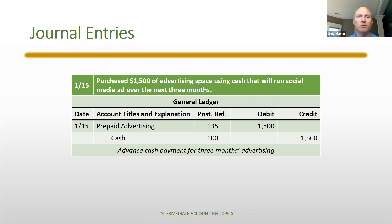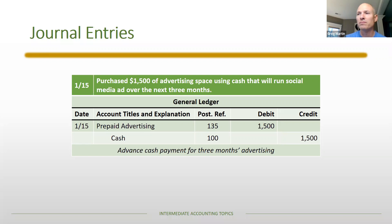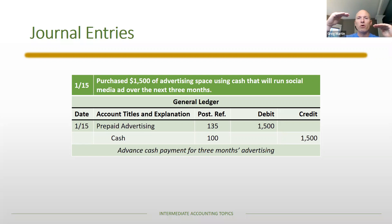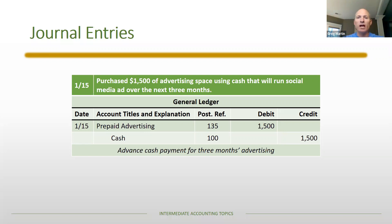Prepaid advertising is an asset because it has that future economic benefit element. Over time as those ads run, we consume the prepaid advertising — that asset goes away and we record the advertising expense. Under accrual accounting, it's not when we pay for the advertising that we record the expense; it's when the ads actually run. At that point you'd debit the expense and credit prepaid advertising. We haven't incurred the expense yet, but it's certainly coming.